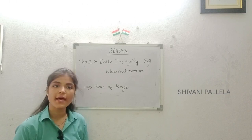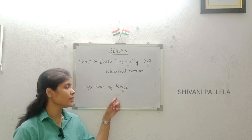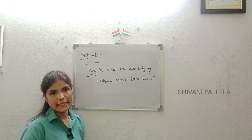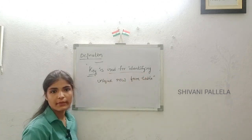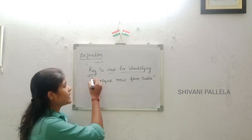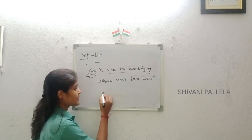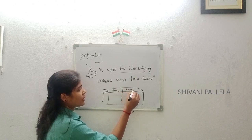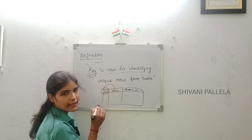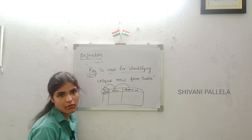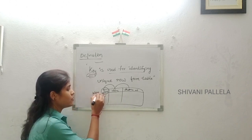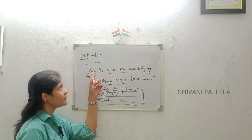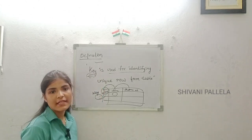We will discuss the definition of a key — what is meant by a key and what are the benefits of using it. A key is used to identify a unique row from a table. For example, in a table with student hall ticket number, name, and phone number, if I enter the student hall ticket number I will get their name and phone number. So the hall ticket number is the key — it identifies a particular row, not a column.